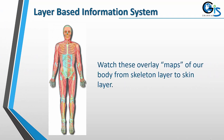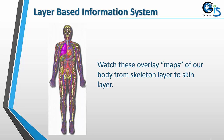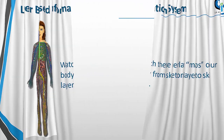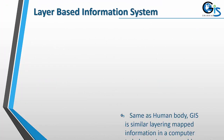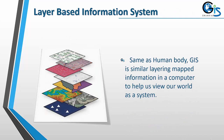GIS is a layer-based information system. Watch this overlay of maps of our body, from the skeleton layer to the skin layer. Same as the human body, GIS is similar layering of mapped information in a computer to help us view our world as a system.